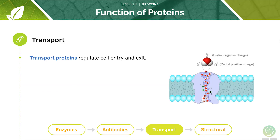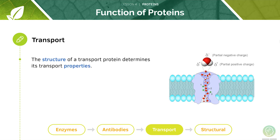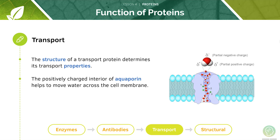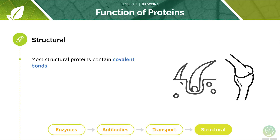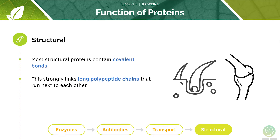Transport proteins regulate what enters and exits a cell — the structure of a transport protein will determine its transport properties. For example, aquaporins are responsible for moving water molecules into and out of cells. Structural proteins provide structure to a cell or organism, meaning they must have flawless structural stability. Some examples are keratin in hair and collagen in cartilage. Most structural proteins contain covalent bonds, which link together the long polypeptide chains that run next to each other.